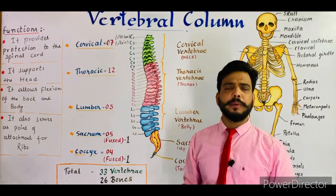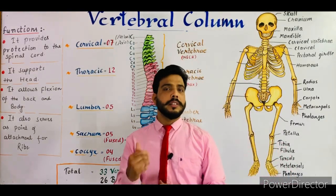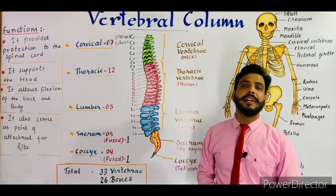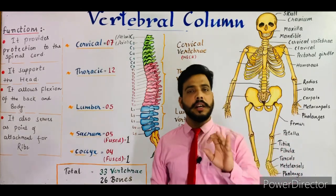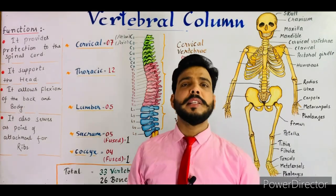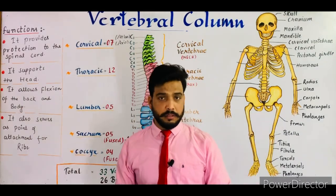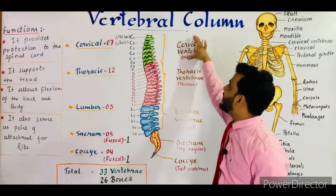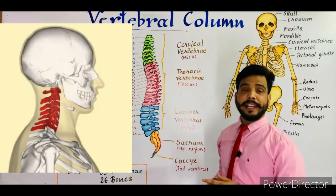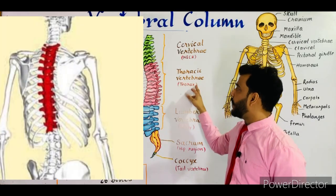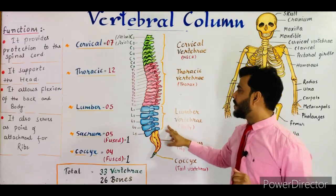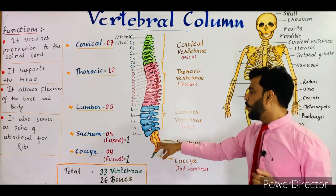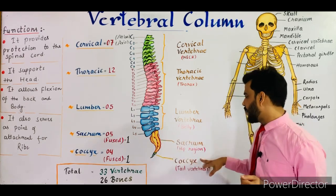The vertebral column, or backbone, is situated at the dorsal side of our body. It consists of a total of 26 bones, known as vertebrae. These vertebrae are divided into five regions, as shown in the diagram: the cervical vertebrae, which form the neck area; the thoracic vertebrae, which form the thorax; the lumbar vertebrae, which form the belly; the sacral vertebrae, which form the hip region; and the coccyx, or tail vertebrae, which form the tail region — a vestigial organ in our body.